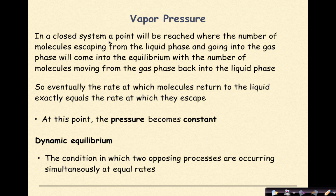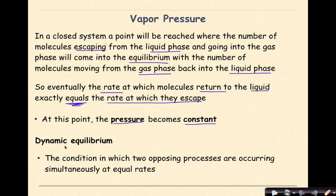So in a closed system, a point will be reached where the number of molecules escaping from the liquid phase and going into the gas phase will come into the equilibrium with the number of molecules moving from the gas phase back to the liquid phase. So eventually, the rate at which molecules return to the liquid exactly equals the rate at which they escape. At this point, the pressure becomes constant. We call this dynamic equilibrium, the condition in which two opposing processes are occurring simultaneously at equal rates.